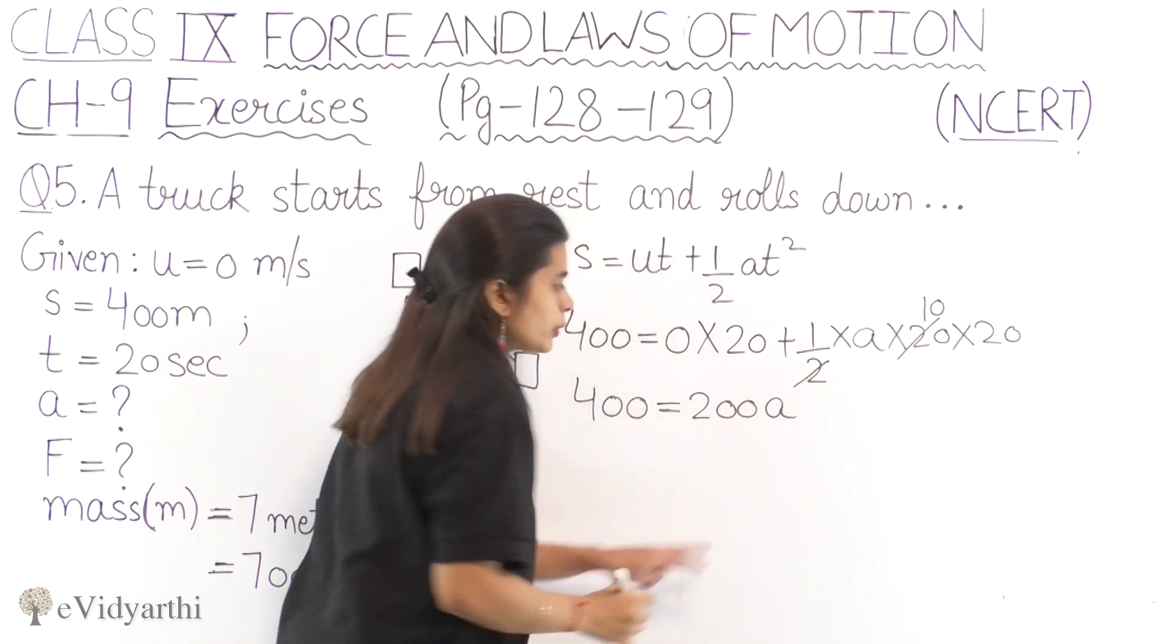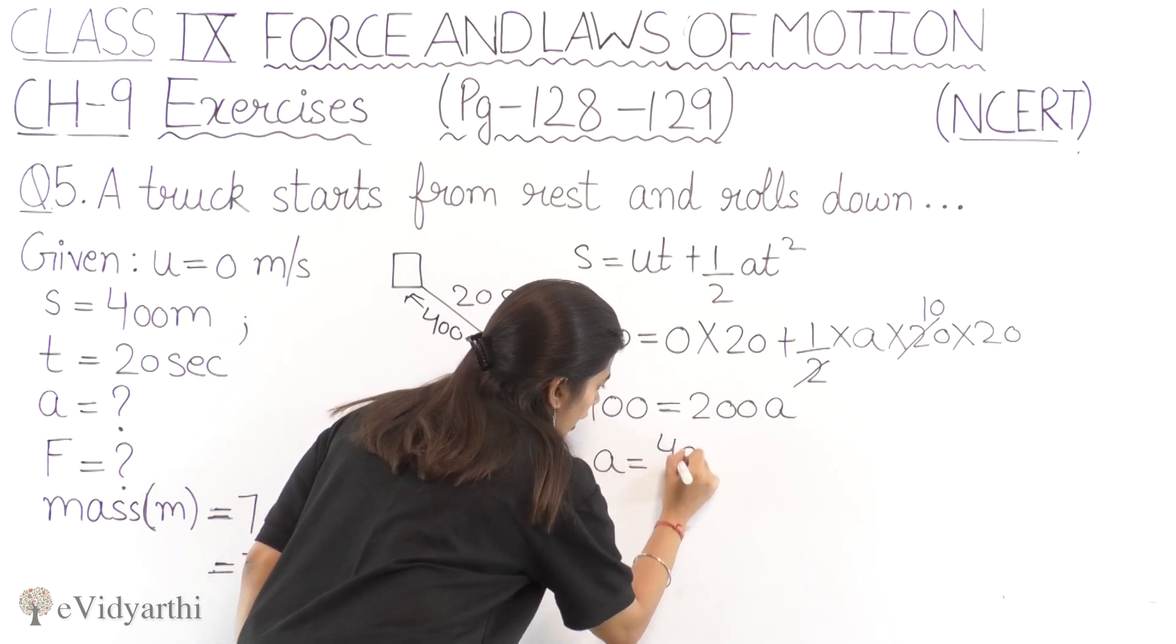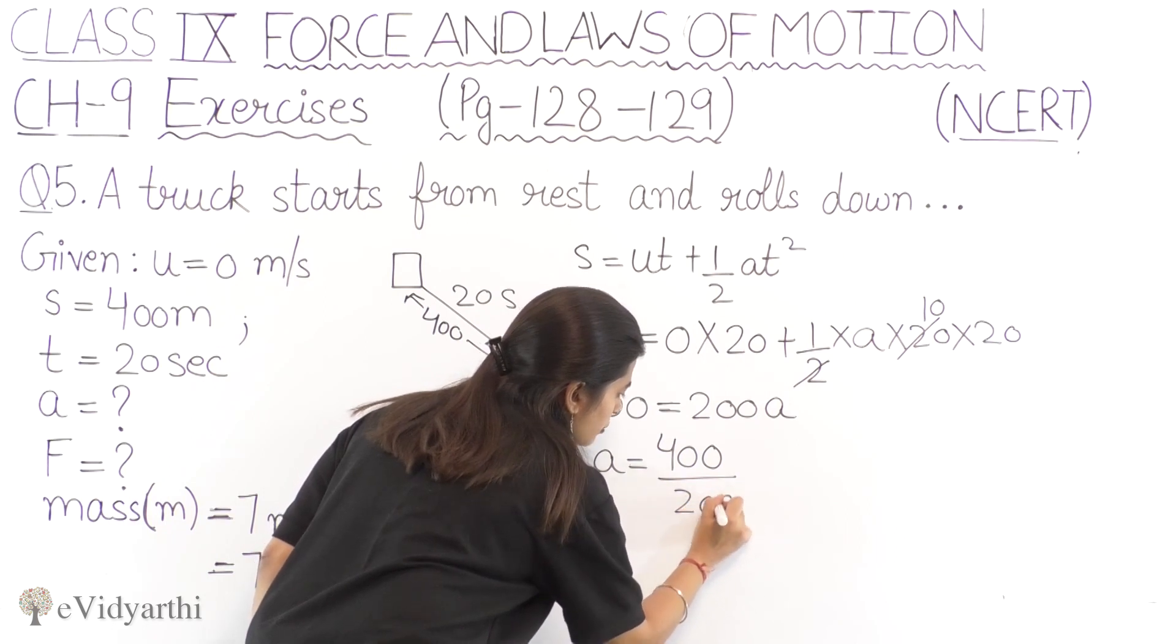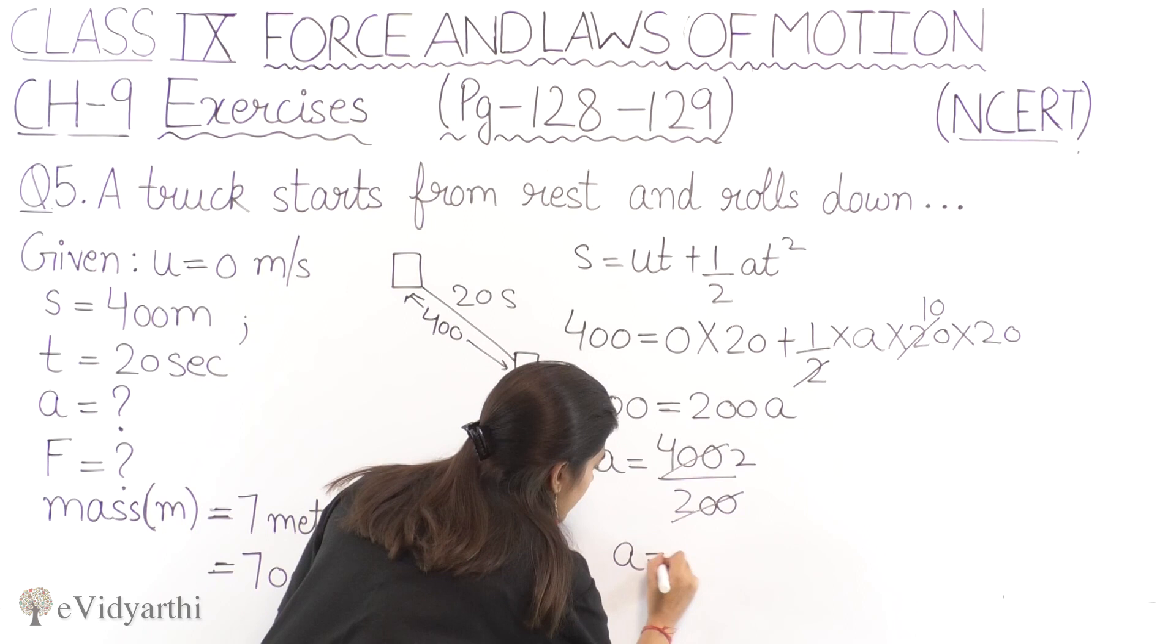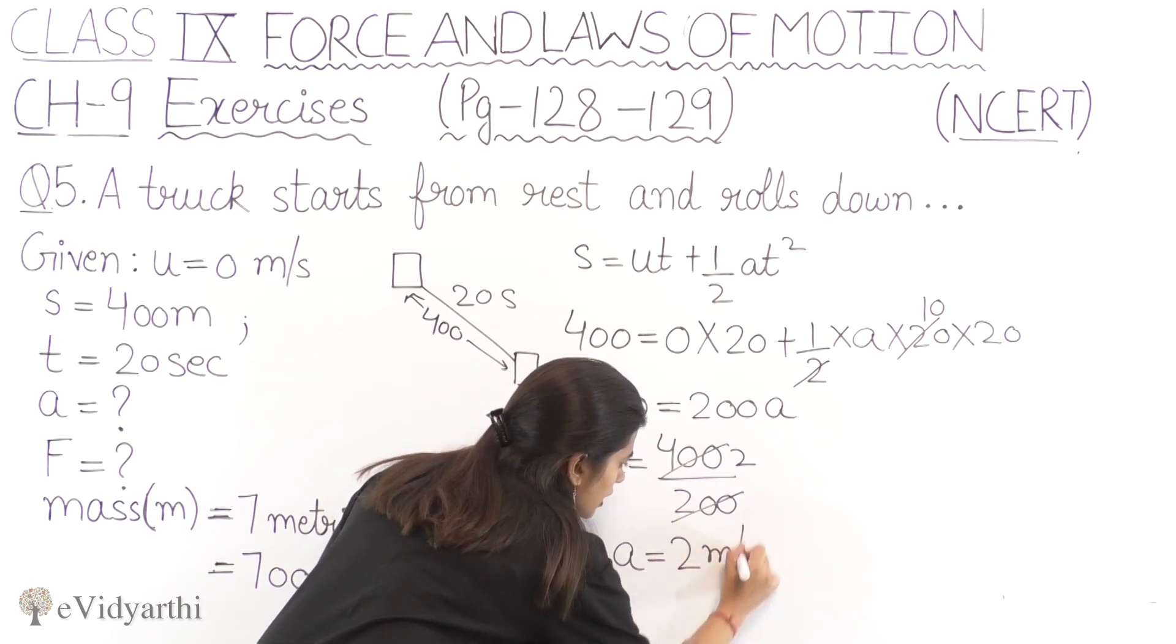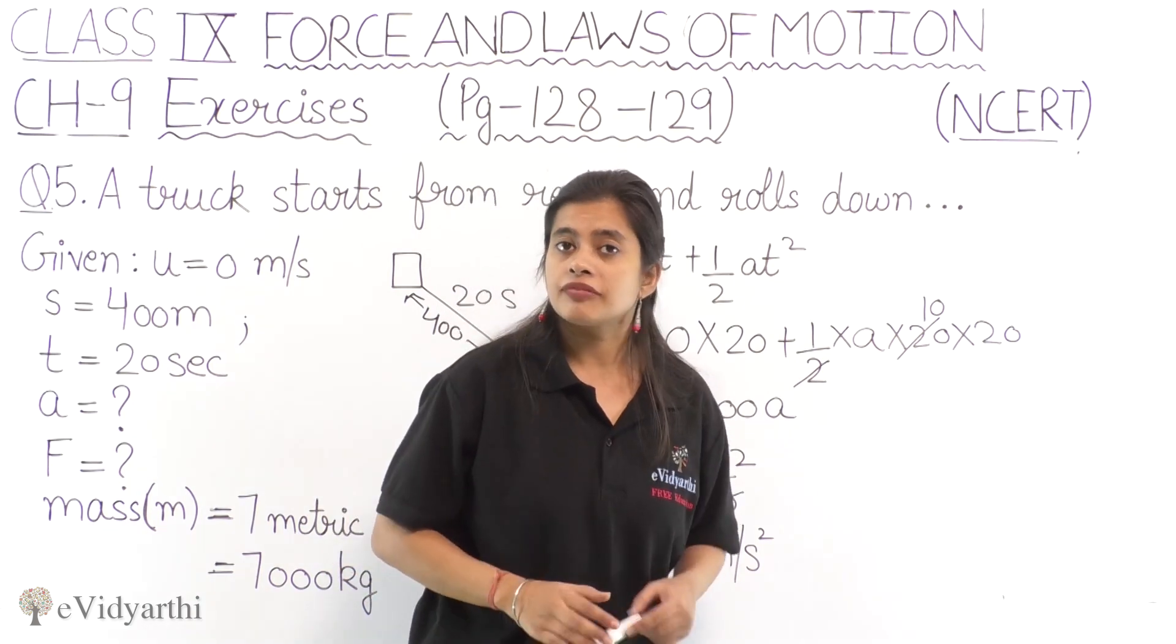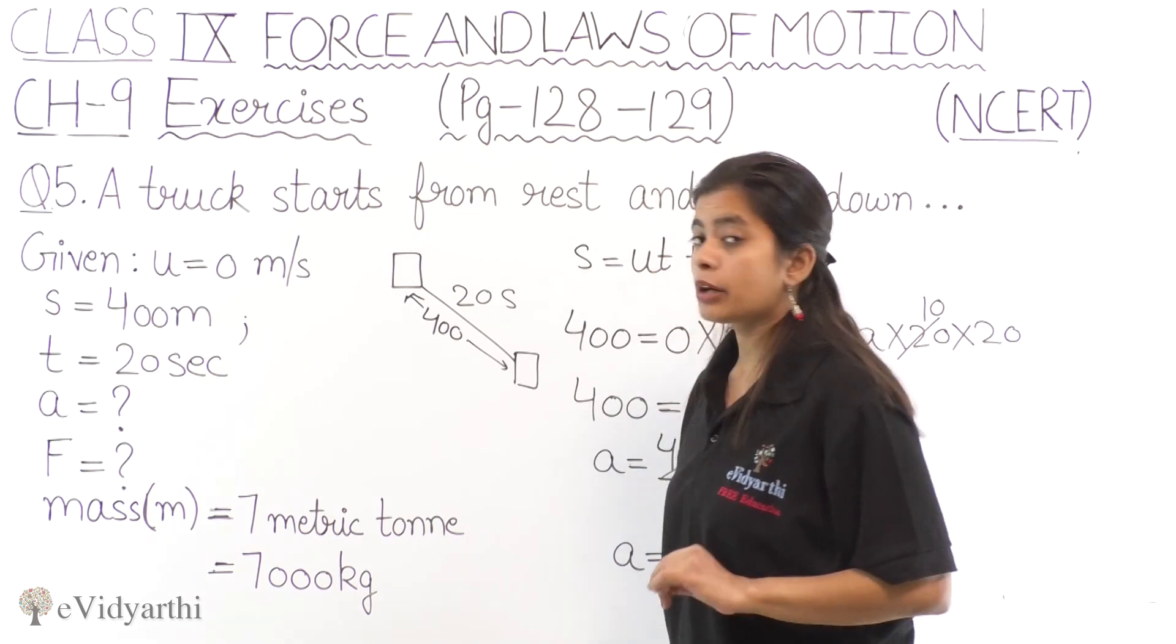So 400 and this is 0, we don't need to write it. And here we have 200a. Now we need to find out the acceleration. So to find acceleration, 400 divided by 200, and the answer will be 2. So finally our acceleration is 2 meter per second square.